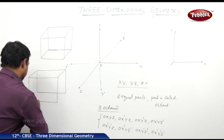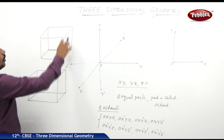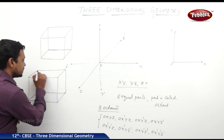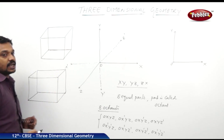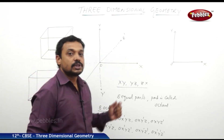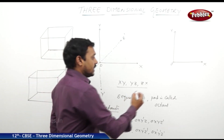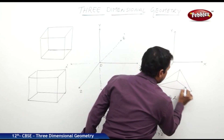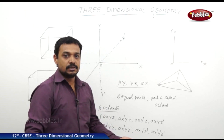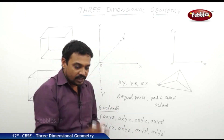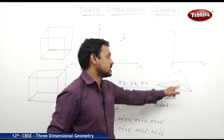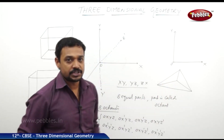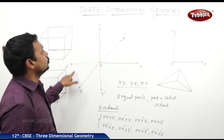In a cube, all edges are equal, but in a cuboid, only opposite sides are equal — each edge is equal to its parallel counterpart. These are examples of three-dimensional geometry. Another example is a tetrahedron: three points on the base and one vertex in space, connected to form a pyramid shape. These are some examples of three-dimensional figures.